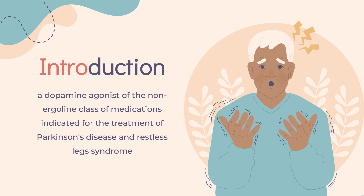Rotigotine, sold under the brand name Neupro among others, is a dopamine agonist of the non-ergoline class of medications indicated for the treatment of Parkinson's disease and restless leg syndrome. Like other dopamine agonists, Rotigotine has been shown to possess antidepressant effects and may be useful in the treatment of depression as well.